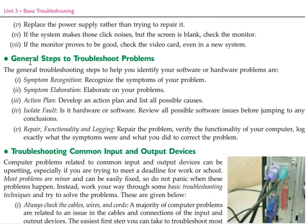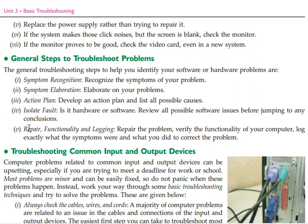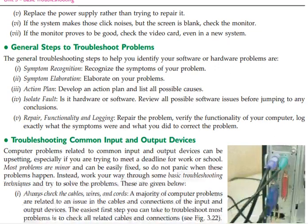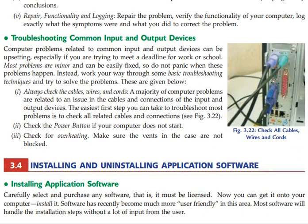General steps to troubleshoot problems: if you have a symptom, you start with symptom recognition. When we immediately get the symptoms of the problem, our coping system will be brainstormed around those symptoms. We need to take action plans immediately. These are the general steps, then troubleshooting common input and output devices.